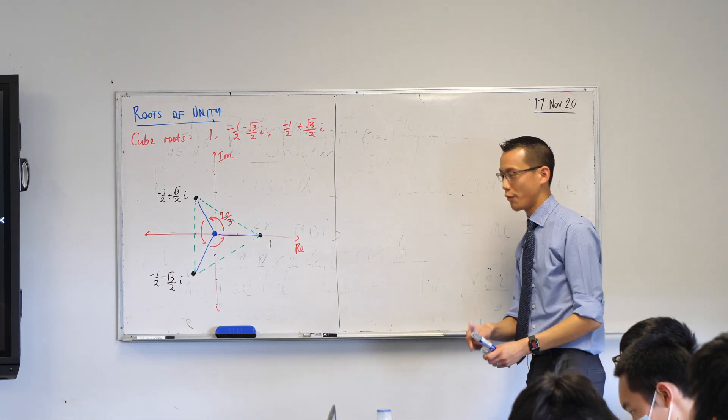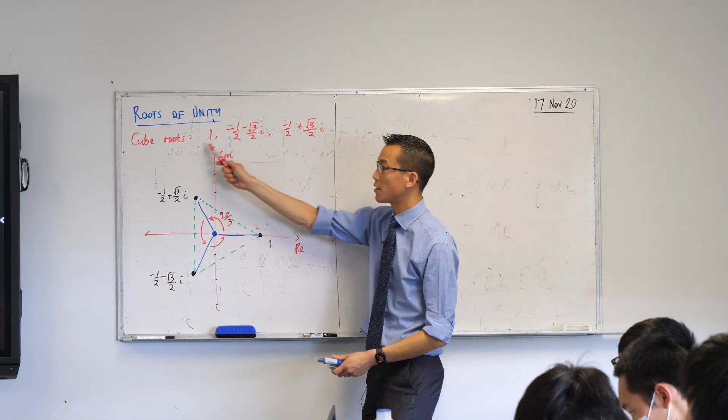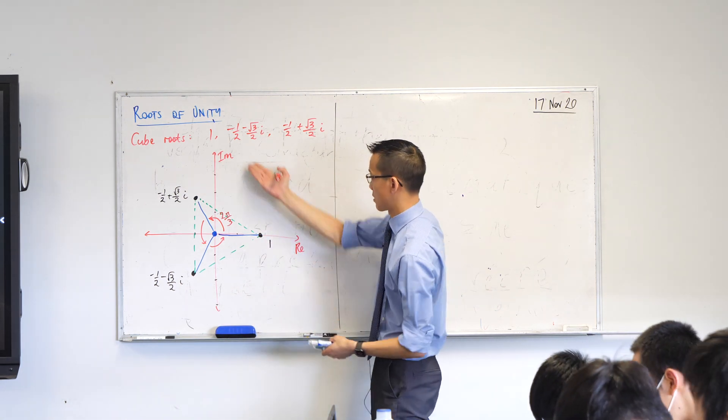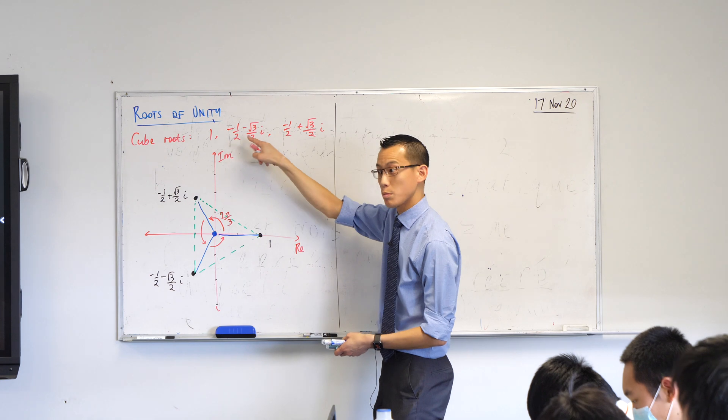What I want to do is I want to push on this a little further because essentially what we did to get to these answers was we used the rectangular form of a complex number. That's written in rectangular form right, x plus i y.